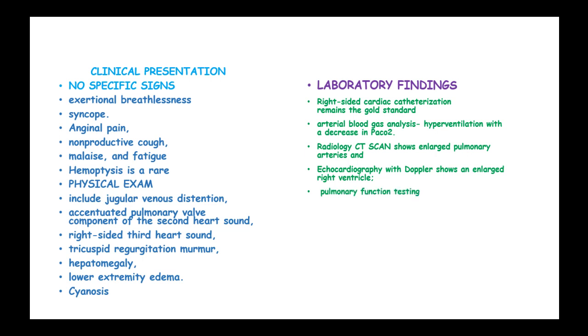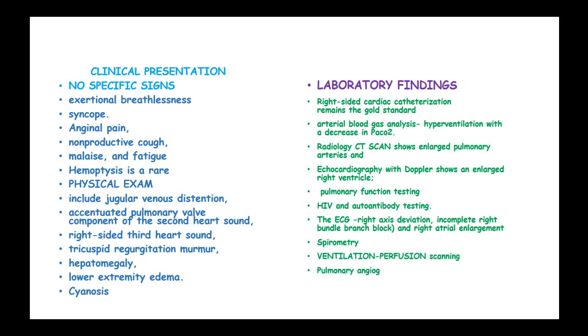Pulmonary function tests should be done together with HIV and autoantibody testing. ECG will show right axis deviation and right atrial enlargement. Spirometry and ventilation-perfusion scanning, pulmonary angiography, and MRI should also be done in these patients.